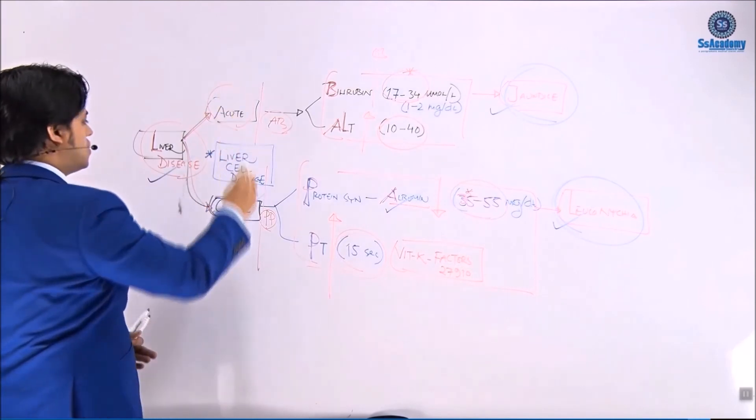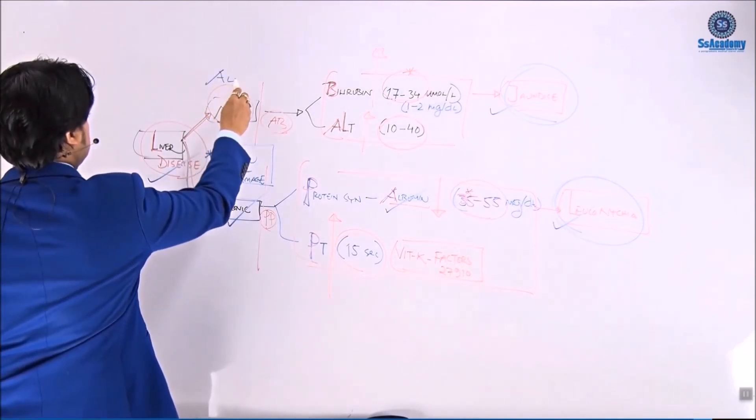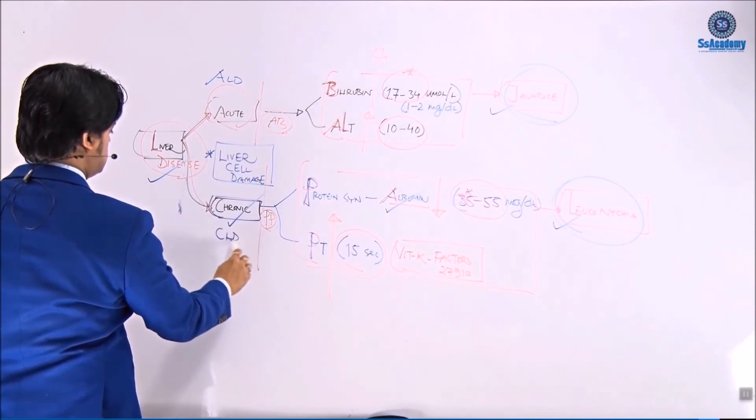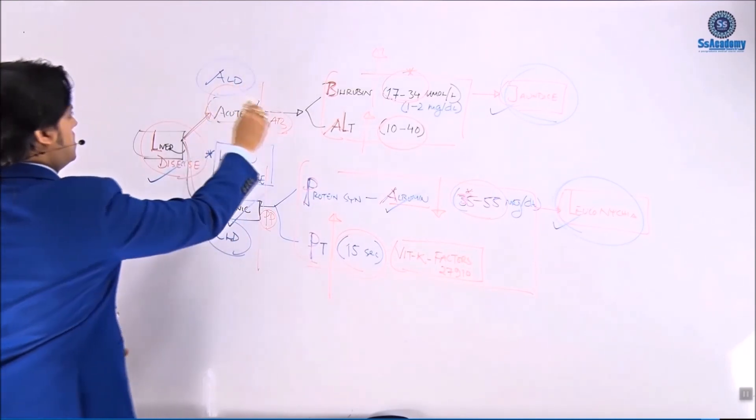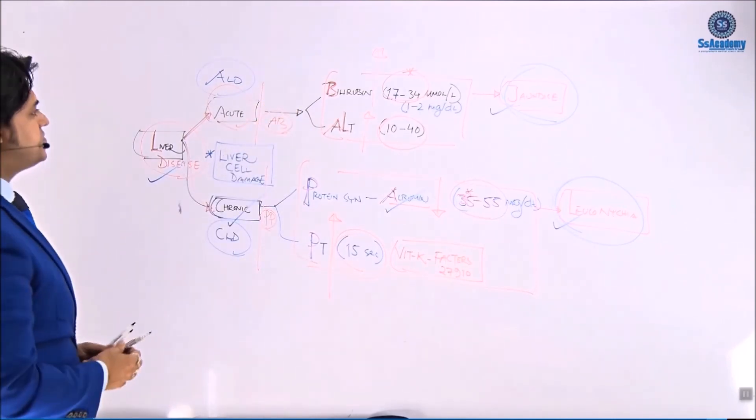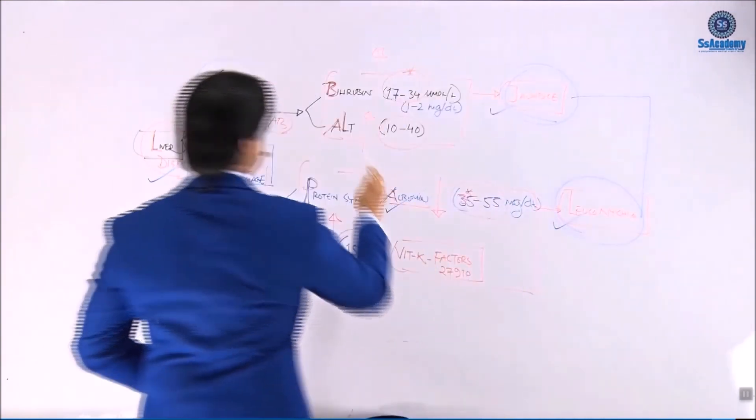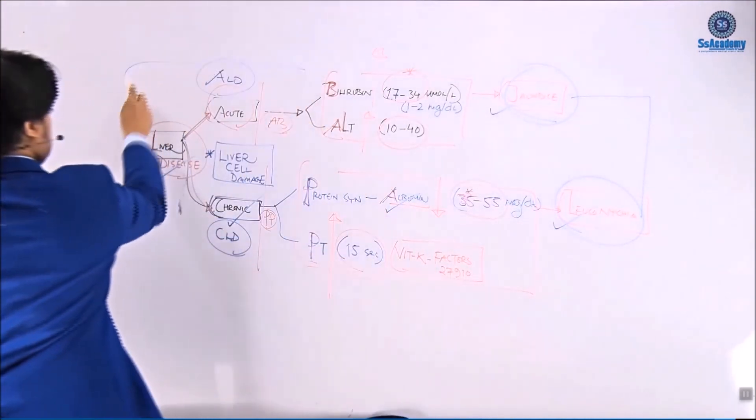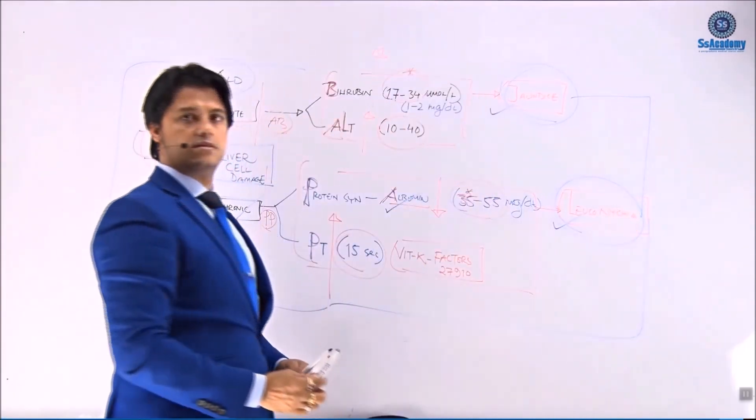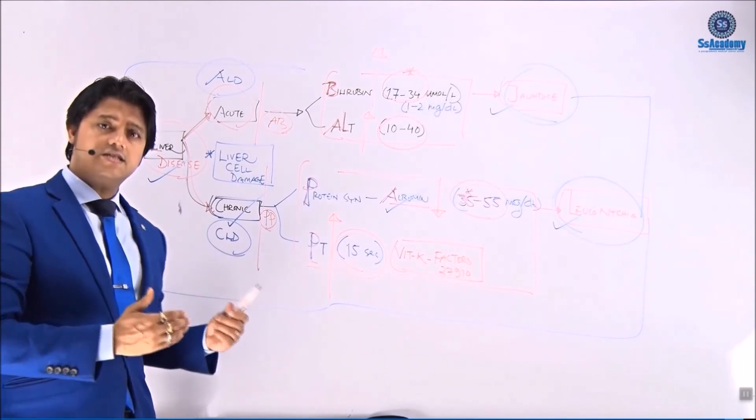So that leads to the chronic liver disease. So we can say this is acute liver damage or acute liver failure. This is chronic liver disease. The word that we can use. So this is very important discussion my dear. The box. Yes, this is a very important discussion.